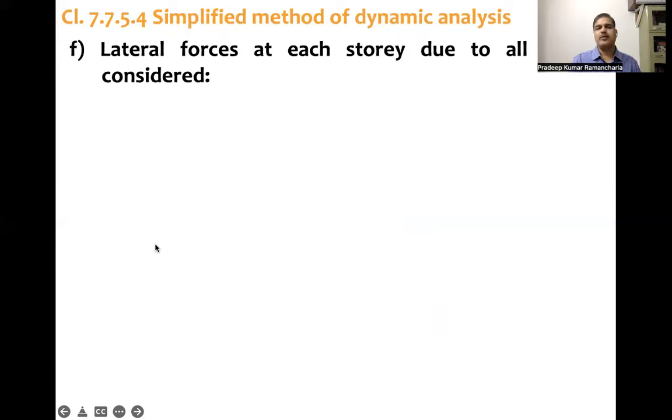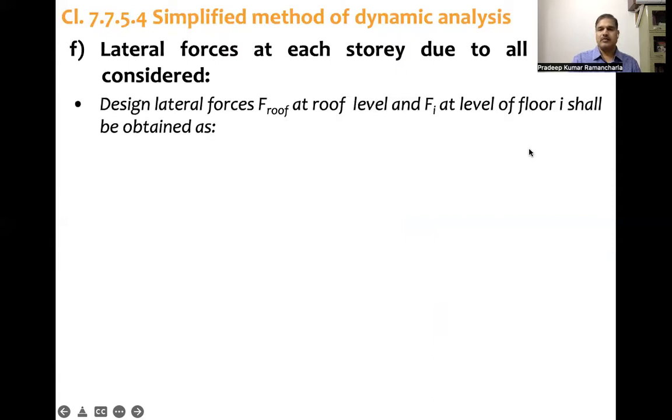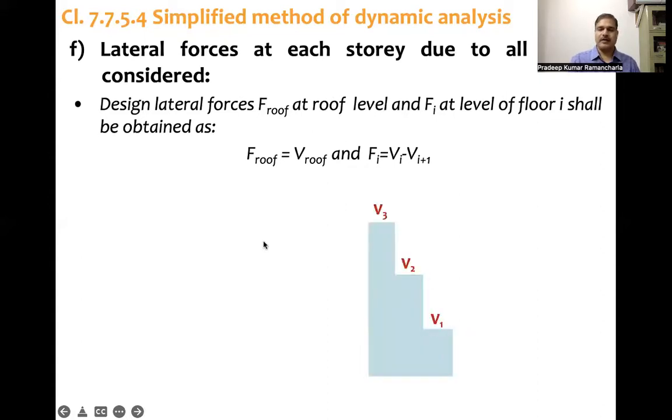Then lateral force at each story due to all modes considered. Design lateral forces Froof at roof level and Fi at level of floor i shall be obtained as: whatever is the lateral force at roof it will be that only, but at any floor, the shear force is the difference between the shear force at two levels, ith level and i plus one level. You can see here F3 equals V3, F2 equals V2 minus V3, and F1 equals V1 minus V2.